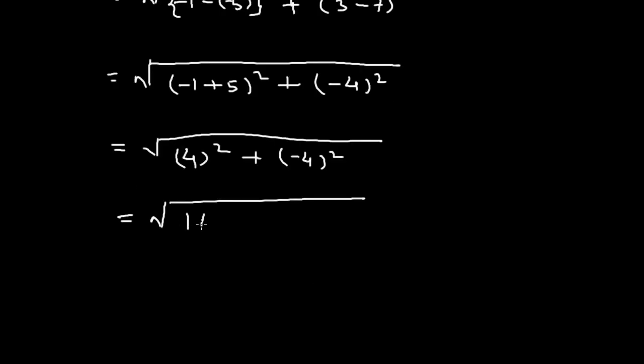This equals 16 plus 16, which equals square root of 32, and this equals 4 square root of 2. So this is the solution of the second part. Thank you.